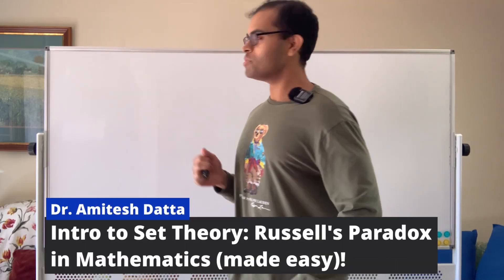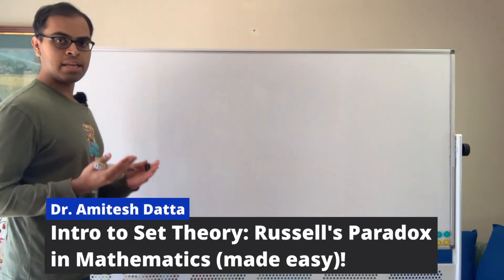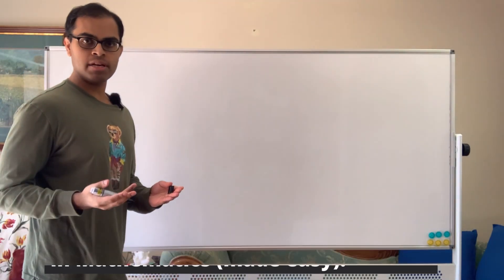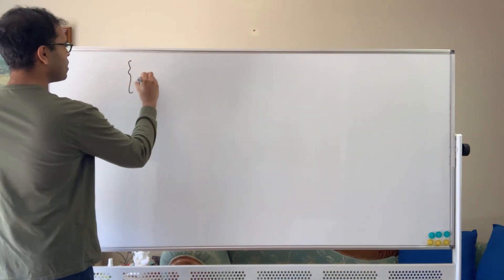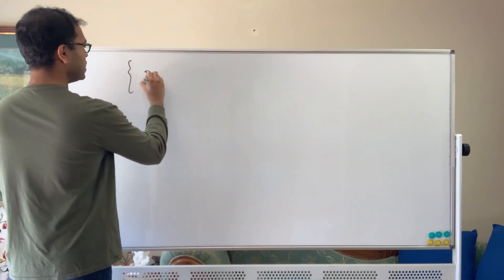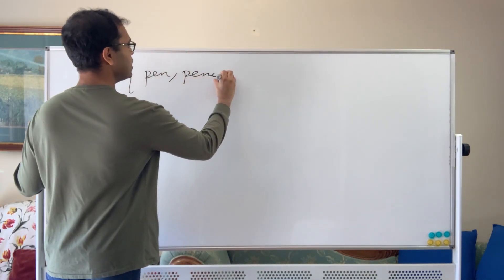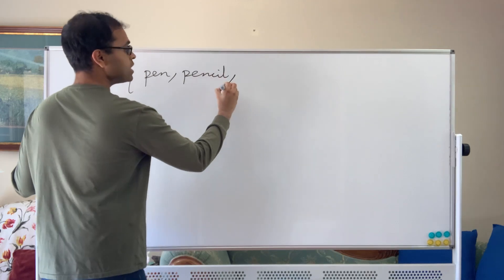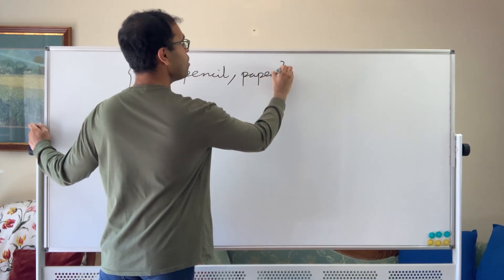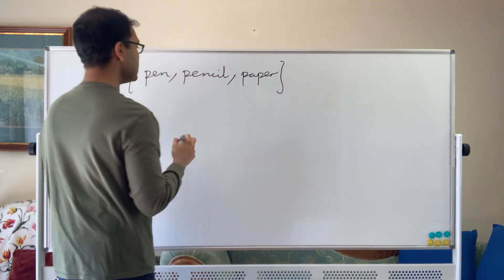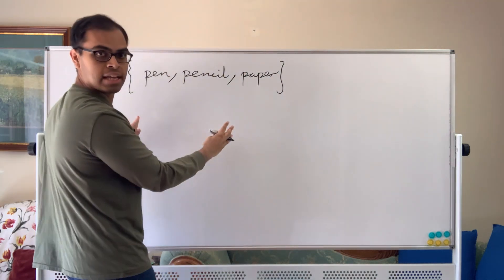A set is a collection of objects. For example, if you have a pen, pencil, and paper in your backpack, that will make a set. We indicate it like this: {pen, pencil, paper}. The order doesn't really matter, but we separate the different objects by commas and we use curly braces at the ends to indicate what the set is.